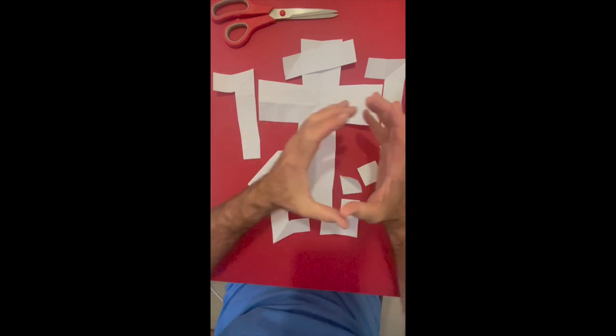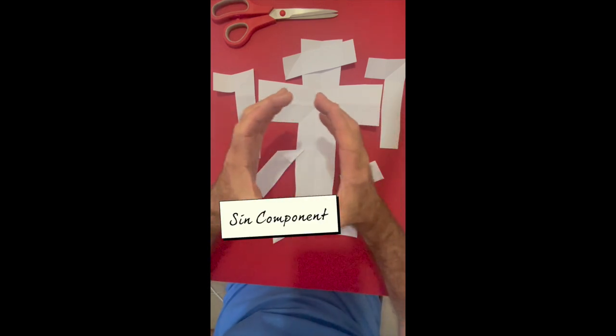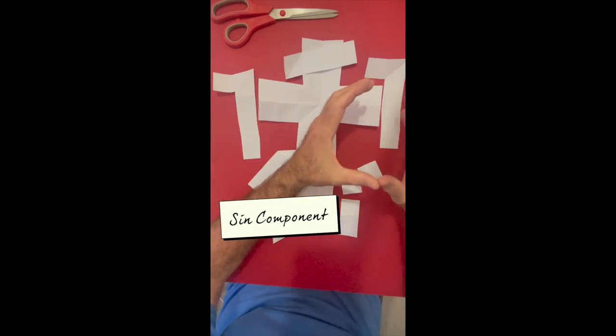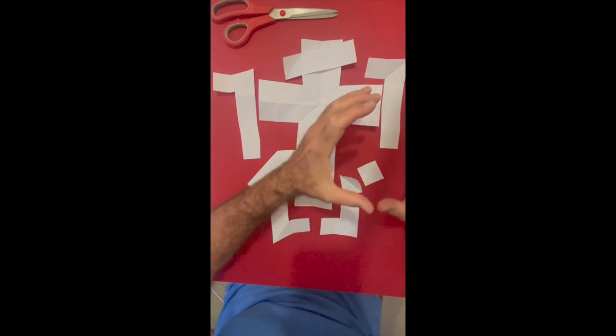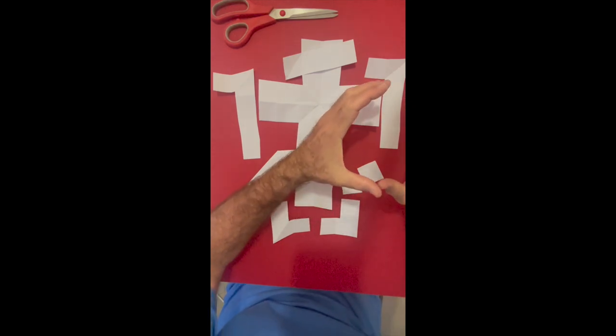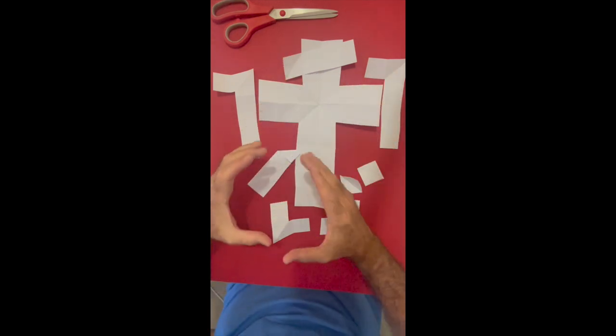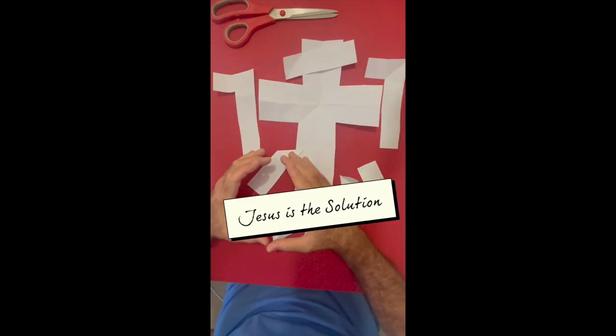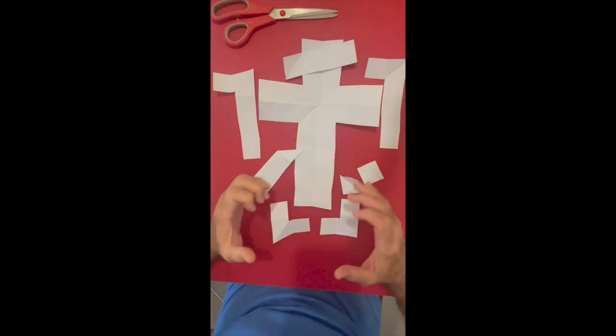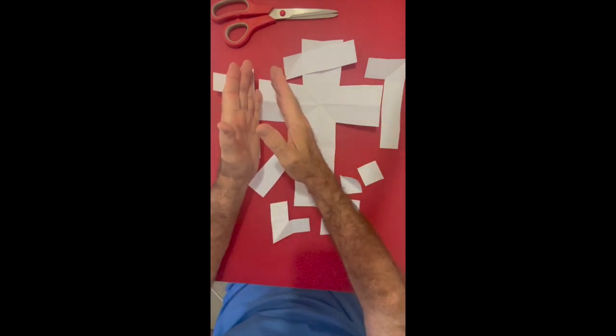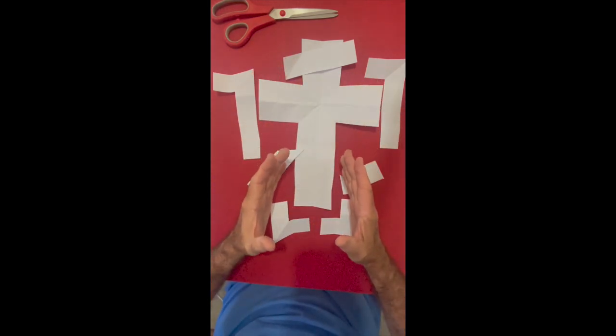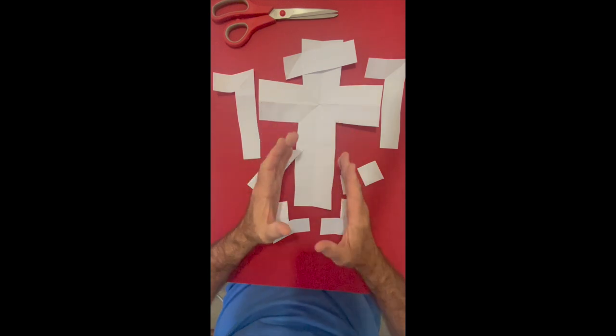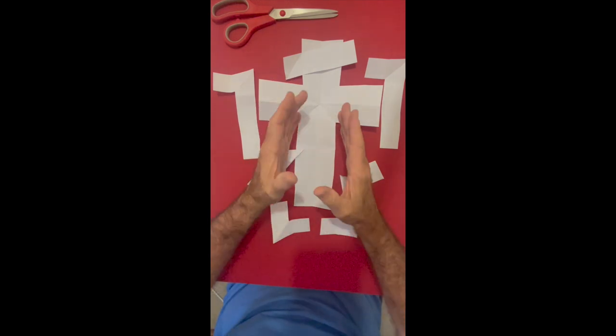But because of man's sin, what happened is the sin of the first Adam caused the entire human race to come into sin. So we have a sin problem. We have a sin barrier. We have a sin issue that separated us from God. But Jesus is the rescue package. Jesus is the one that came so that he would deal with our sin so that he could open relationship to the Father. And so Jesus is the story. And that's what this is all about over here. It is culminating on the cross and Jesus dying on the cross.